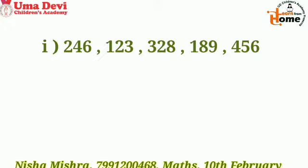Let's solve the first question: 246, 123, 328, 189, and 456. Ascending order means we write the numbers from smallest to biggest. So tell me, which is the smallest number? Yes — 123 is the smallest. We write 123 first. Now we have four numbers left: 246, 328, 189, and 456.